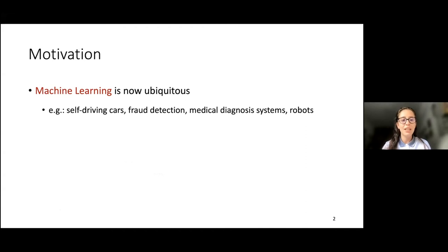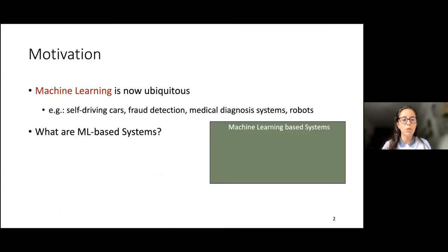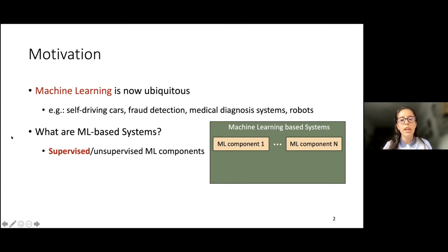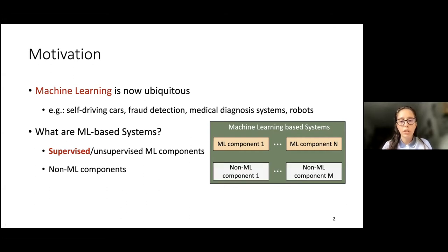In this specific work, we define machine learning based systems as systems composed of both machine learning components — for instance, supervised, unsupervised, or semi-supervised, although we focus specifically on supervised machine learning components — and also non-machine learning components. All of these components can interact with one another.